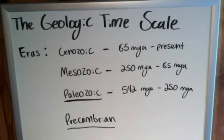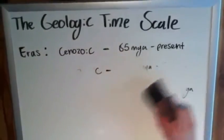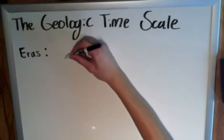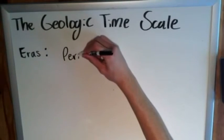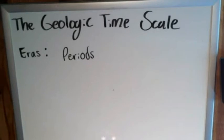Now let's talk about more specific classifications following eras. You probably heard me mention the Cambrian period — directly below the eras we have periods. There's a varying amount of periods within each era; I think the lowest amount within any single one is three. Notable periods include the Cambrian, Jurassic, and Triassic, among others.